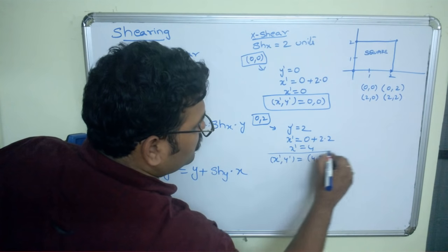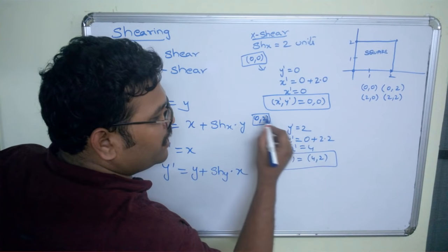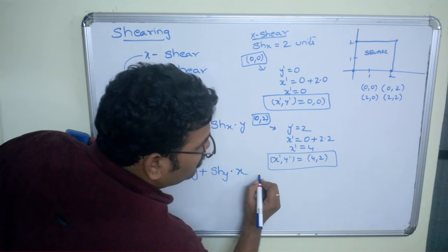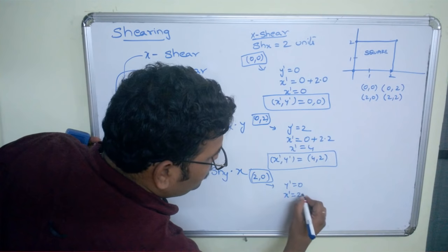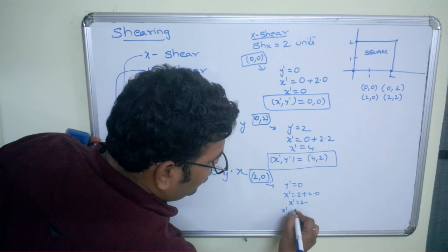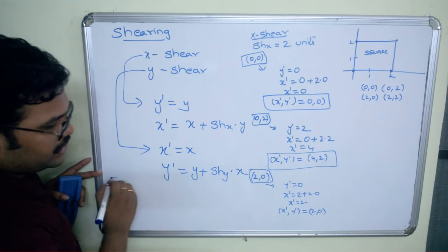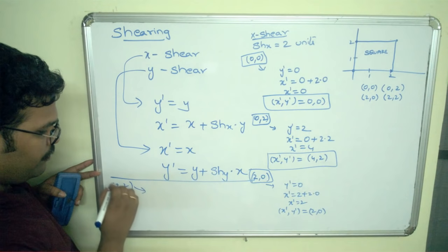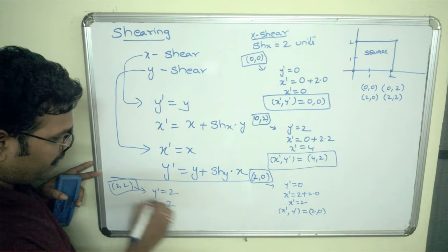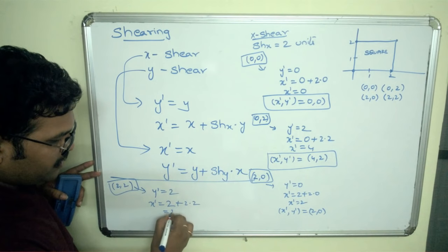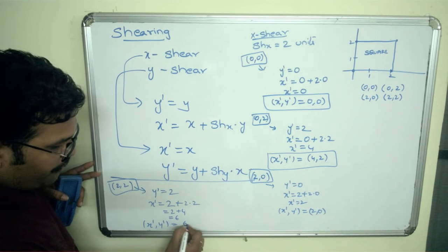For the third point (2,0): y-dash = 0, x-dash = 2 + 2×0 = 2. So the new coordinate is (2,0). For the fourth point (2,2): y-dash = 2, x-dash = 2 + 2×2 = 2 + 4 = 6. So the new coordinate is (6,2).